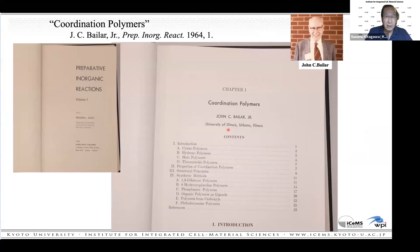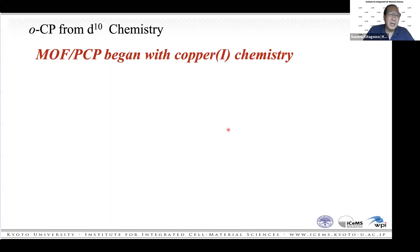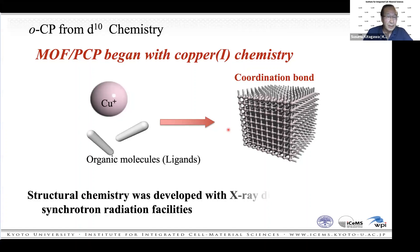There is an interesting book where Baylor wrote a review article on coordination polymers. The organic ligand-bonded CP started from D10 chemistry — meaning transition metal ions having a D10 configuration. MOF/PCP chemistry began with copper(I) chemistry.